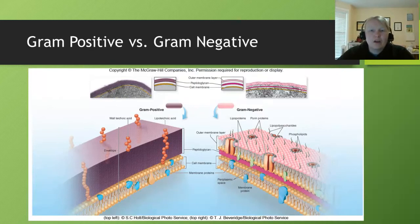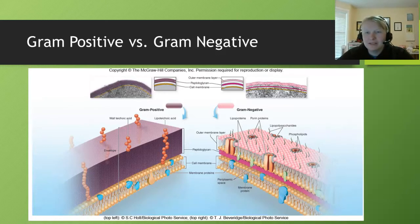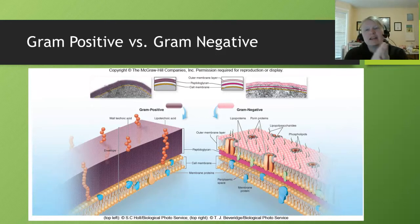The first way we differentiate cells in the lab is gram-positive and gram-negative cells. One of the easiest ways to remember these is the PMP rule. Gram-positive cells stain purple, whereas gram-negative cells stain red. So let's first look at our gram-positive structure.